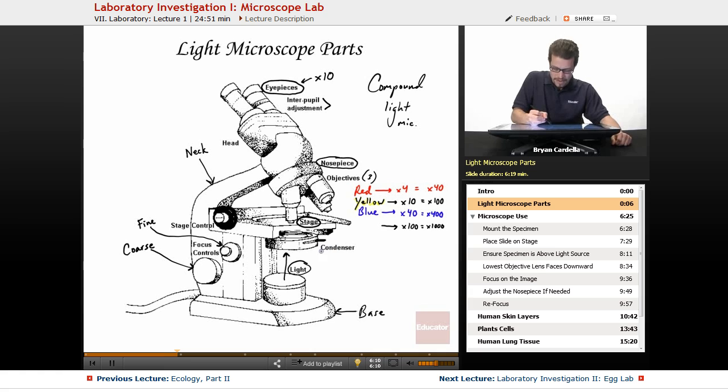The condenser, I haven't really mentioned what that actually does. You can adjust how much light is actually going through the condenser and into the stage region. So those are the major parts of the light microscope.